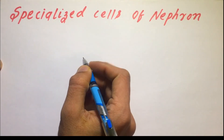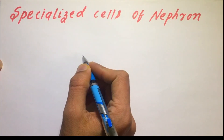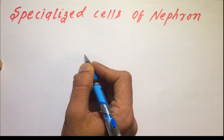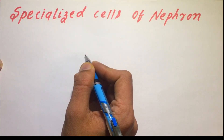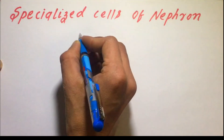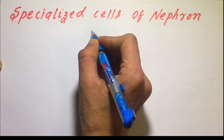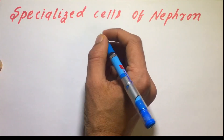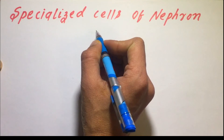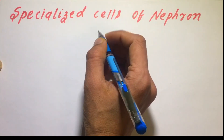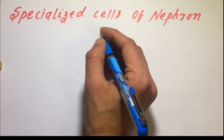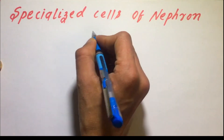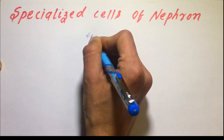Hi, welcome guys. Today we are going to talk about a specialized cell of the nephron. What are the important functions of this specialized cell in the kidney? We will see in this video. These cells are specialized because they perform special functions in the kidney that are very important.